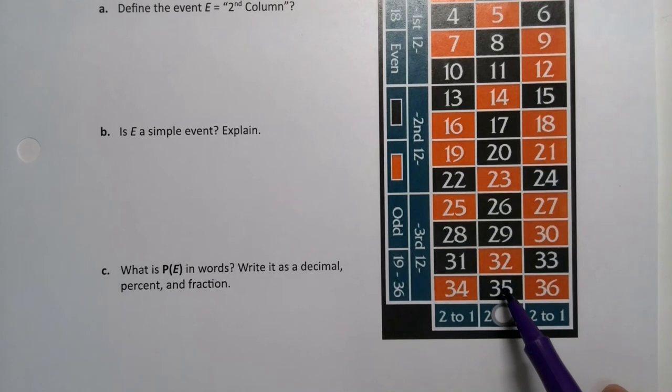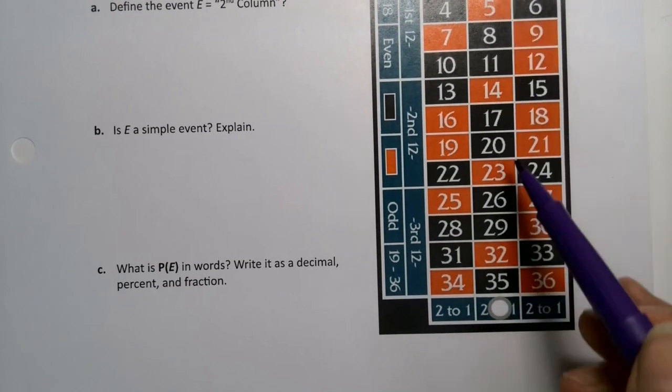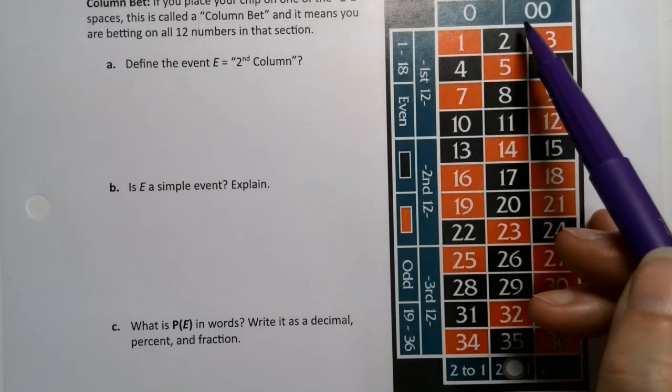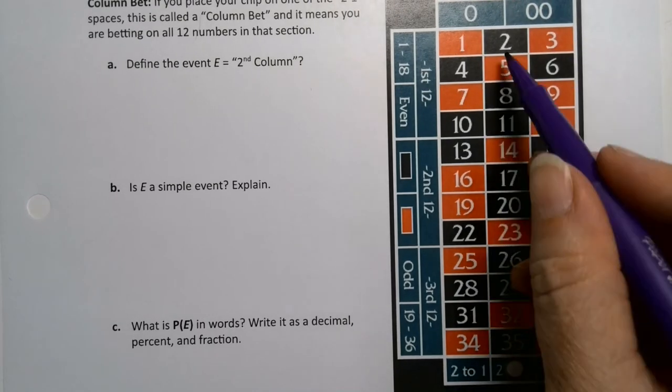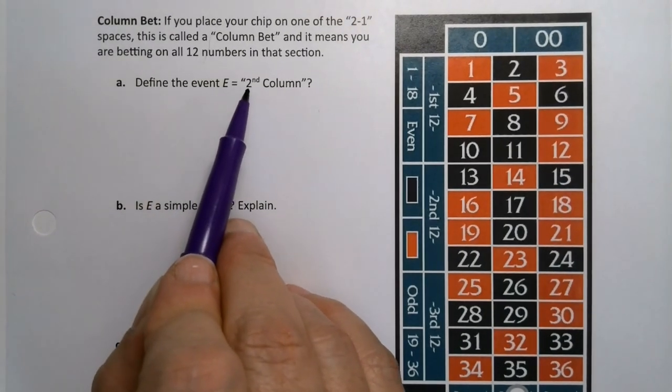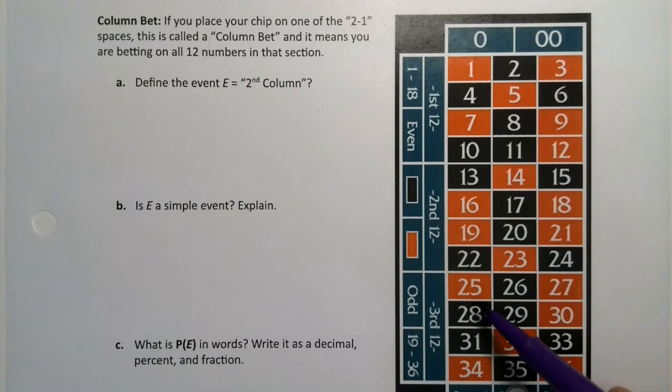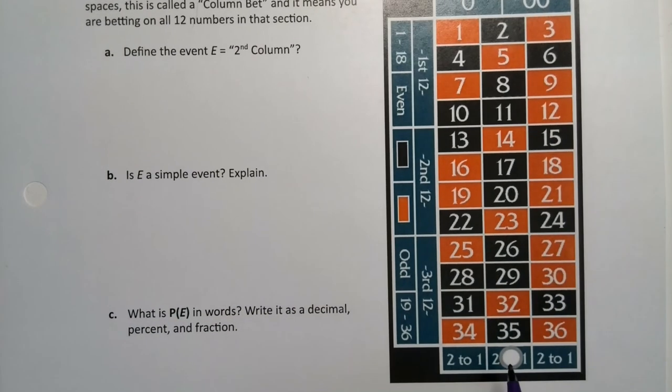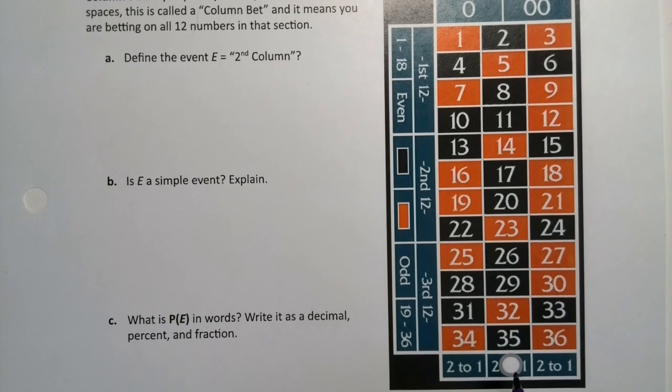If you place your chip on one of the 2 to 1 spaces, so that's right down here, you put your little chip right there on the 2 to 1 space. What you're doing is you're betting on this whole column right here. That whole column, but not the 00's, they don't count. Just this whole column. So they want us to define the event E, which is betting on that second column, because there's a first column, a second column, and a third column. When you put your chip right there, you're betting on that second column.